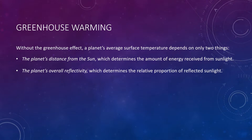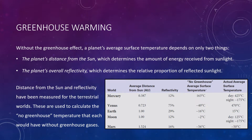Both distance from the sun and reflectivity have been measured for all of the terrestrial planets — Mercury, Venus, Earth, the Moon, and Mars. With a little mathematics, these measurements can be used to calculate the 'no greenhouse temperature' that each world would have if it did not have any greenhouse effect. This table shows the results.